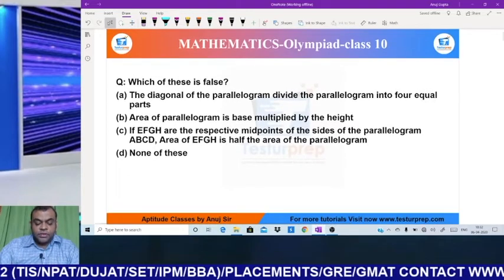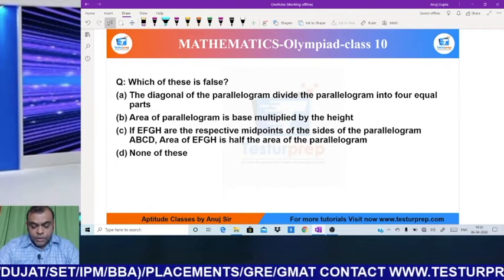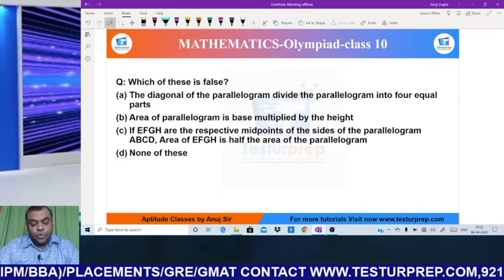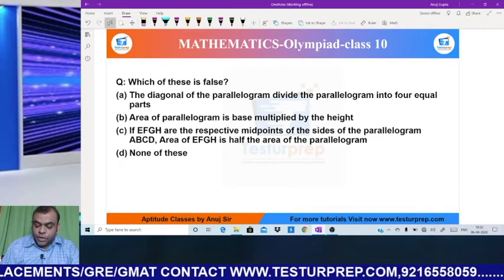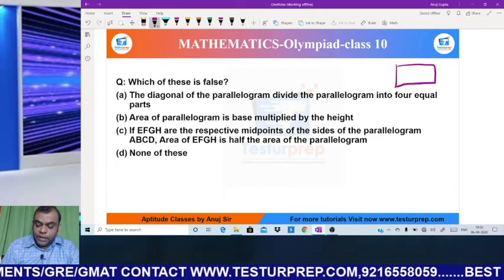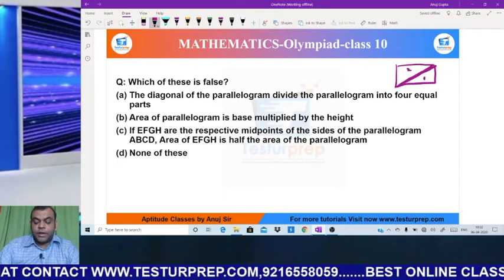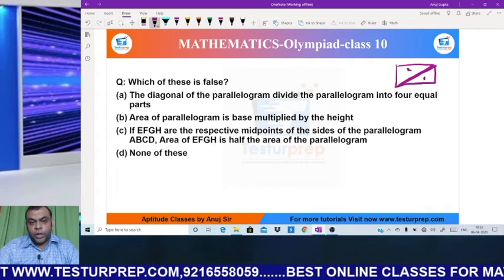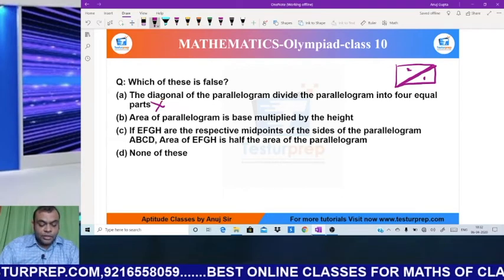My next question says that, which of these is false? The diagonal of the parallelogram divides the parallelogram into 4 parts. Mind it, here it's diagonal word, not diagonals word. So the diagonal, if I draw it, is converting it into two triangles. It is not converting it into 4 equal parts. Hence, my A option is wrong.